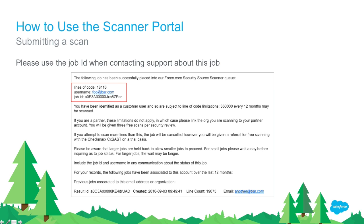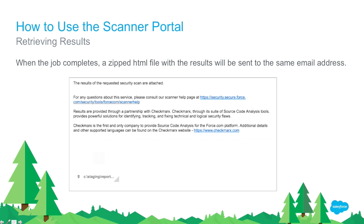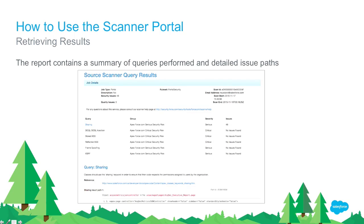Then, in about an hour — we've got very powerful new servers and lots of capacity — almost all scans complete in less than a half hour, and most complete in less than an hour. You'll get emailed to the email address on file for the Authorize Apex username the results: a zip file containing a summary of the queries that were run and a description of the vulnerabilities found in your org.